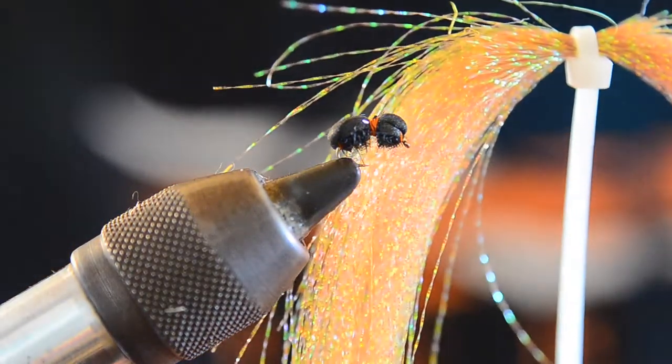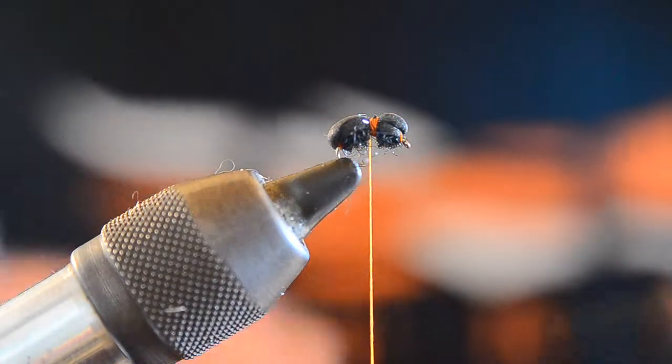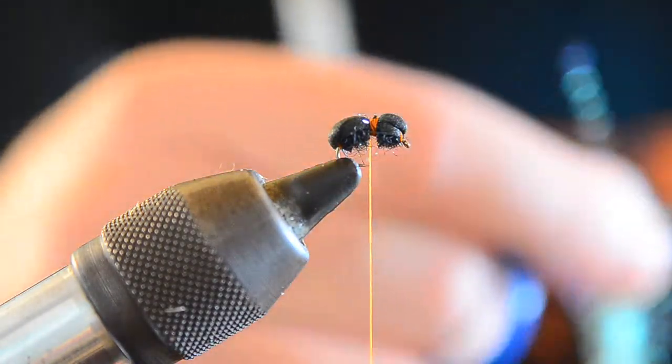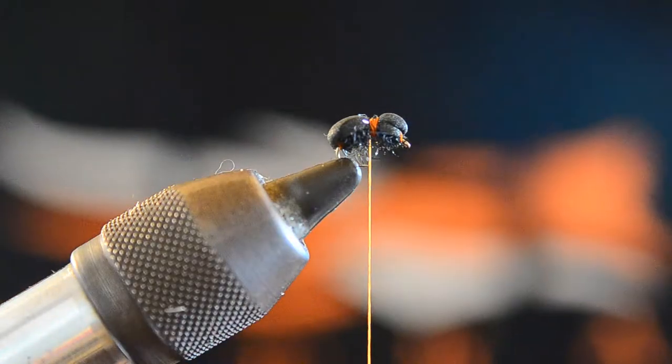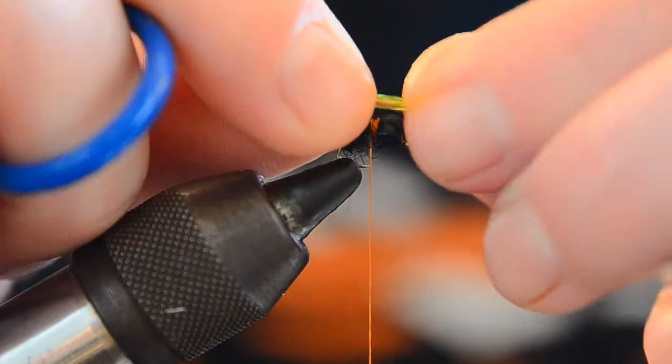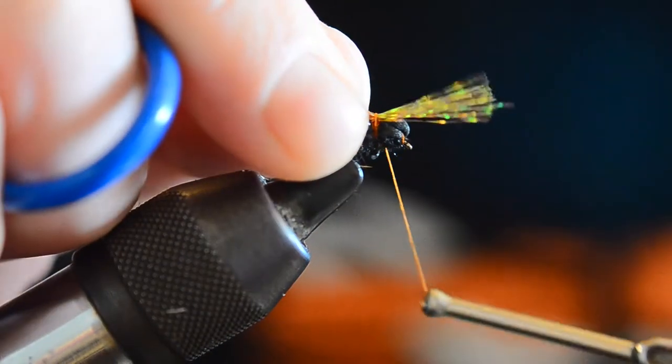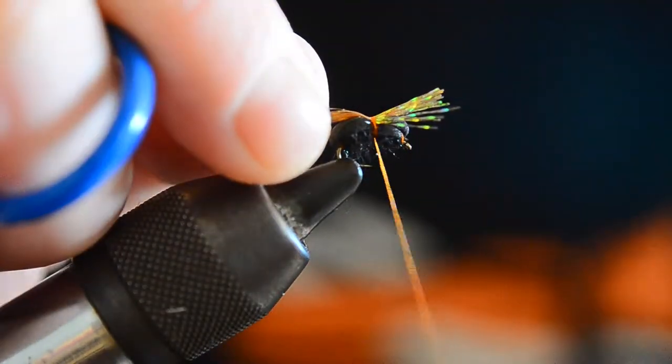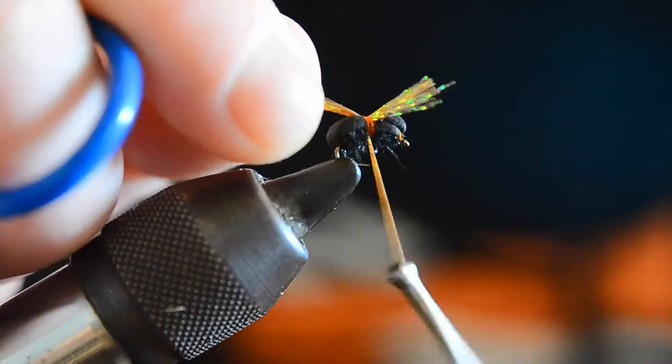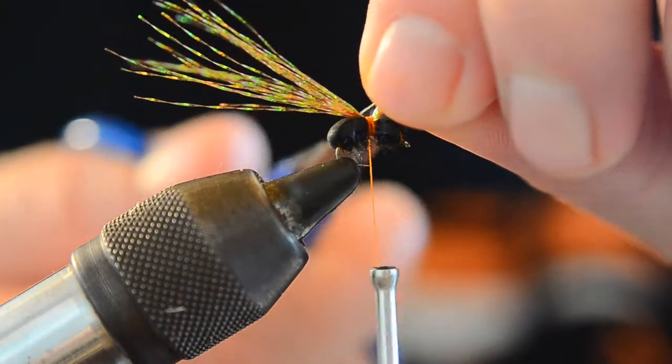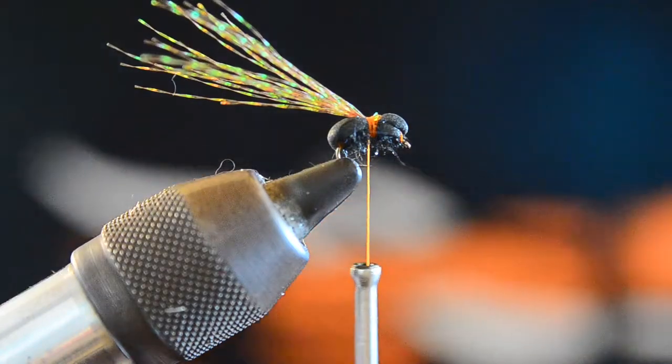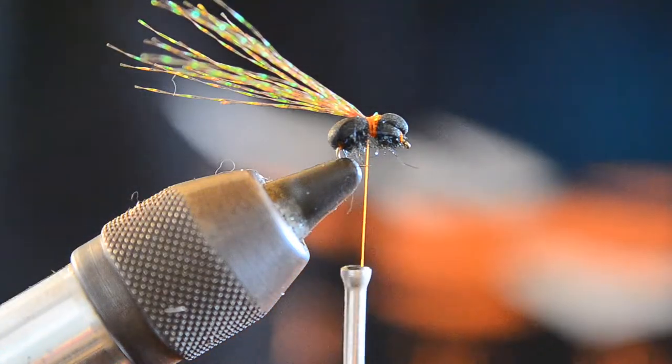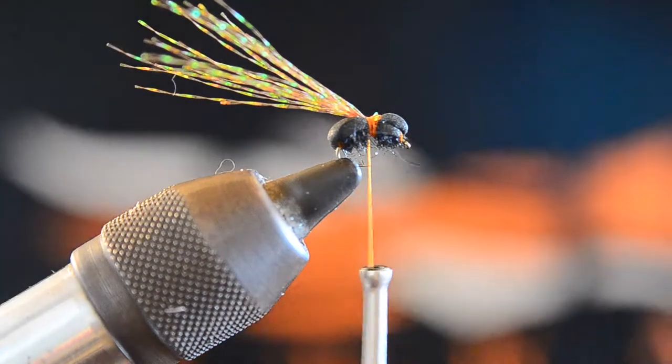For the next step, we're going to use some root beer crystal flash for an underwing. Maybe a dozen strands of that or so. We'll tie that in, cut off the tag ends, and you can leave that long for now. That's not really going to bother anything.